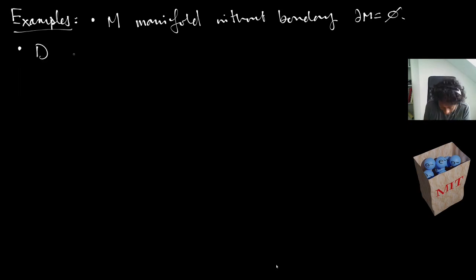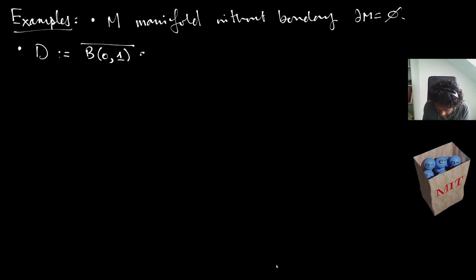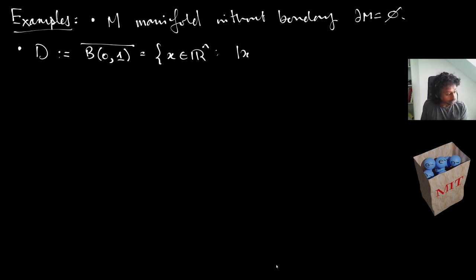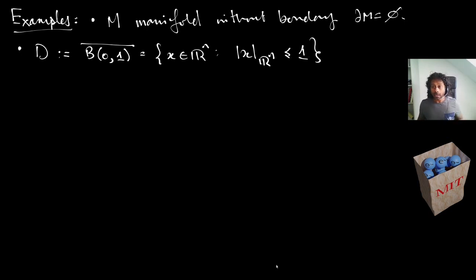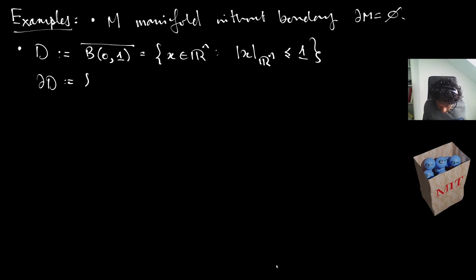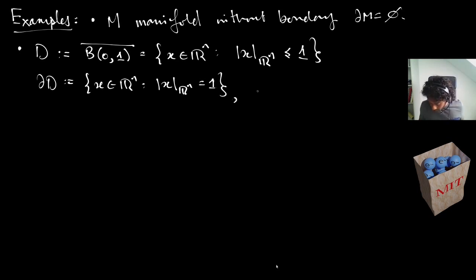If we take the unit ball in Euclidean space centered at zero radius one and take its closure — the points of R^n such that |x| ≤ 1 — this is a manifold with boundary. The boundary is precisely the sphere, and the interior is just the open ball we started with.